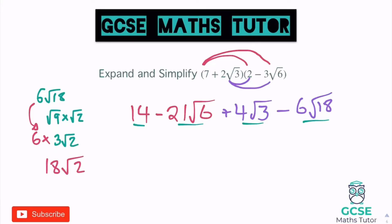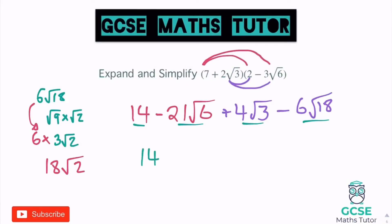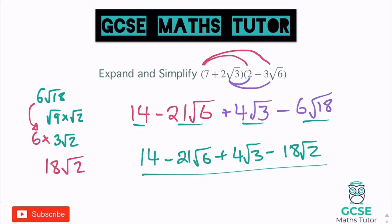So let's write what we've got: 14 minus 21 root 6 — doesn't simplify — plus 4 root 3 — doesn't simplify — take away 18 root 2 — doesn't simplify. We've got a root 6, a root 3, a root 2, and a normal number. None of them join up, so that would be our final answer. Which obviously looks very different to some of the others — expect anything in the way that answers look here.